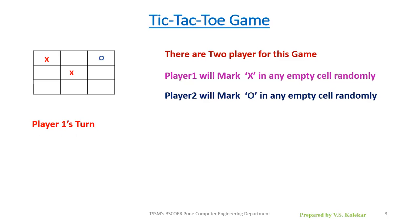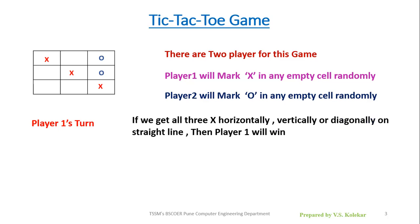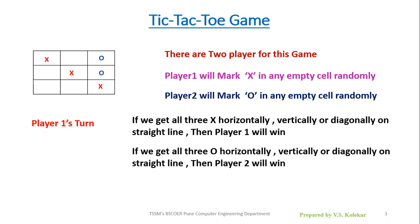Player one marks X again on their second turn, then player two marks O. On player one's third turn they mark X again, and the game stops because if you get all three X's horizontally, vertically, or diagonally on a straight line, the game ends. Here player one has won the game because we got all three X's on a diagonal straight line. This is how the tic-tac-toe game is played.